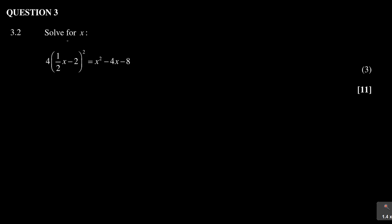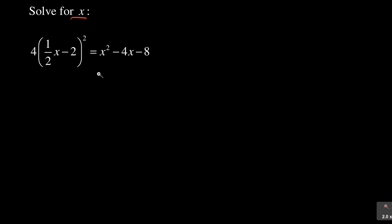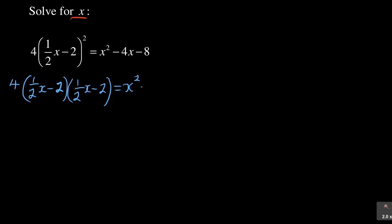There is another question — it says we must solve for x and it is 3 marks. This section was out of 11 marks. On the left-hand side we have 4 times the quantity one-half x minus 2 squared, and on the right-hand side we have x squared minus 4x minus 8. This is also testing your algebra. The squared bracket means one-half x minus 2 times one-half x minus 2.